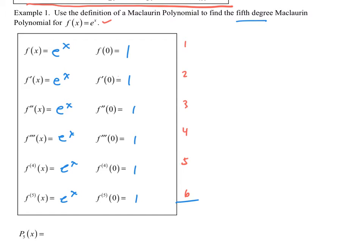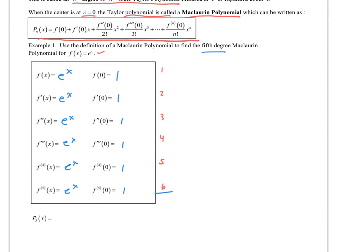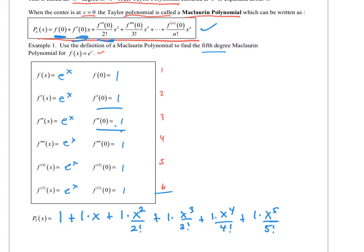Now we put this into polynomial form, following the pattern. f of 0 is 1, plus f prime of 0 — which is 1 — times x, plus f double prime of 0 — which is 1 — times x squared divided by 2 factorial. I continue writing it out. This is a fifth degree polynomial, and I have my six terms.